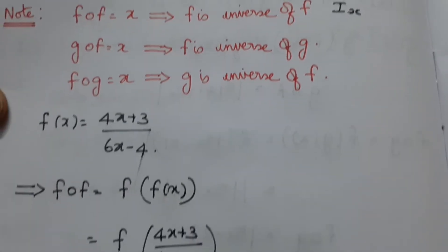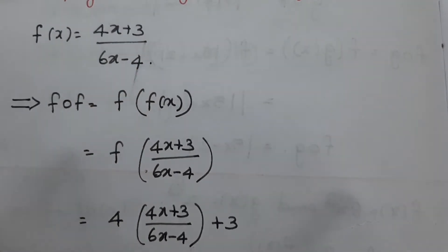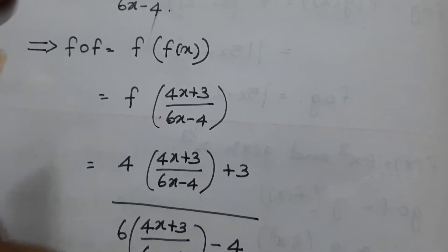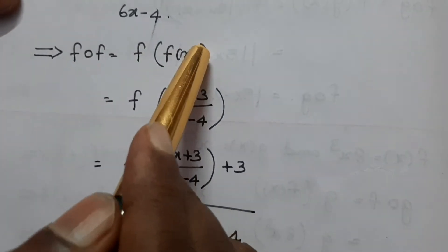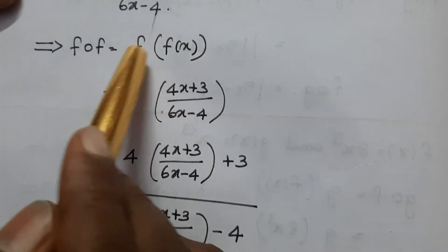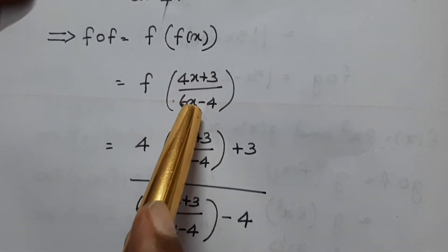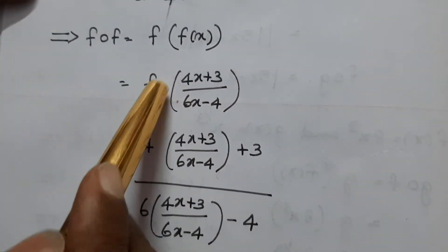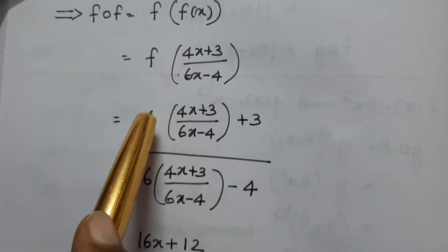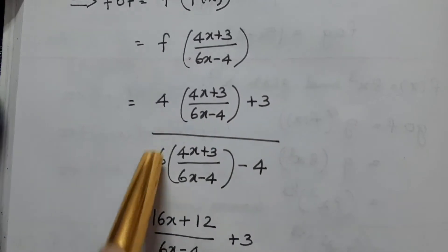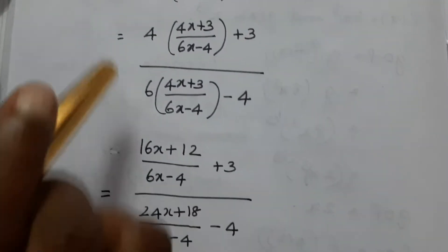So the function f of x equals 4x plus 3 divided by 6x minus 4. To find f of f of x, we substitute f(x) into itself. So f of f of x equals 4 times the quantity 4x plus 3 divided by 6x minus 4, plus 3, divided by 6 times the quantity 4x plus 3 divided by 6x minus 4, minus 4.